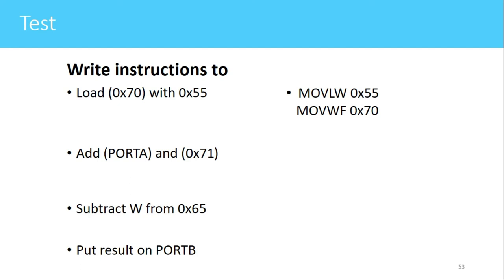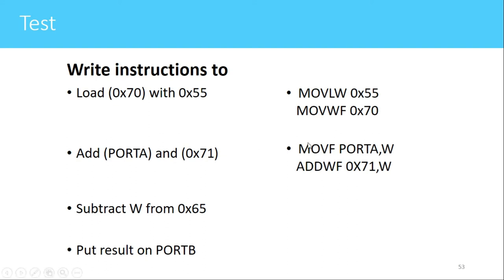The answer for the first question is MOVLW 0x55 and MOVWF 0x70. With the first instruction, the value 0x55 will be copied to the working register, and with the second instruction, the value present in the working register will be copied to location 0x70. For the second question, the first instruction is MOVF Port A, W — this copies the contents of Port A to the working register. Then ADDWF 0x71, W adds the contents of address 0x71 with the working register, and the result is stored in the working register.